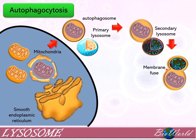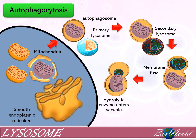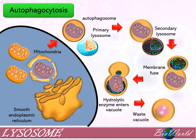The hydrolytic enzymes from the lysosome can now diffuse into the autophagosome. The enzymes begin to digest the organelle, so that in the end a vacuole with waste material is produced.